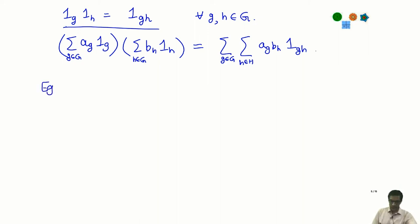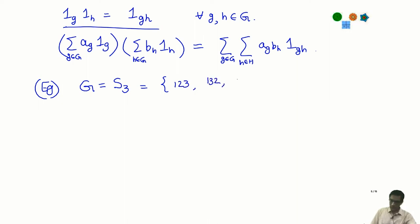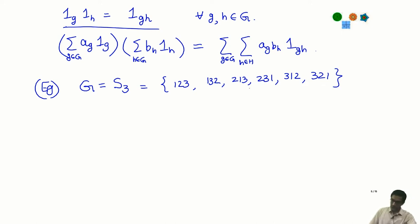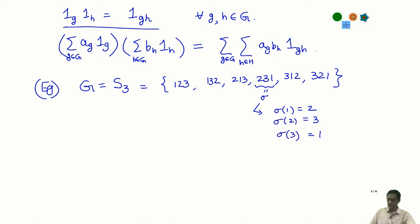Let us do one particular example of a group ring. Take the group S_3, the symmetric group on three letters. In one-line notation, the elements look like: 123, 132, 213, 231, 312, 321. For example, if sigma is the permutation 231, that means sigma maps 1→2, 2→3, 3→1.